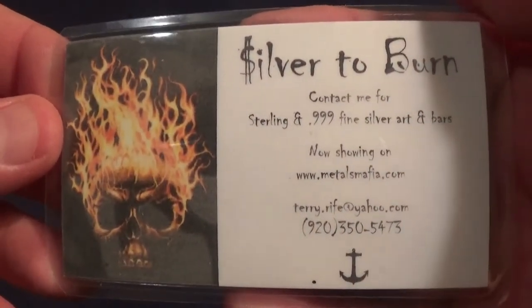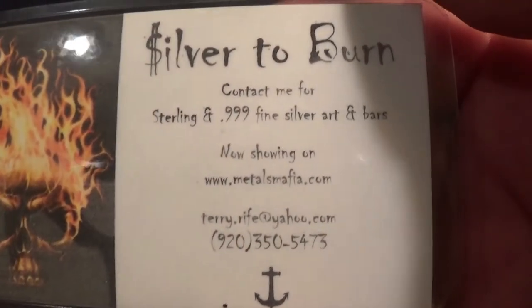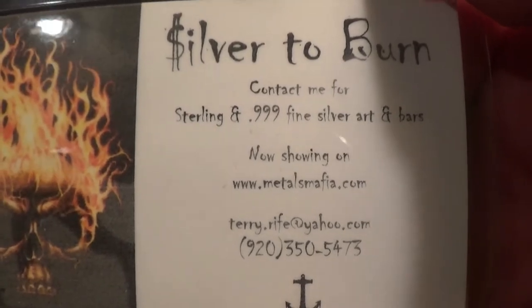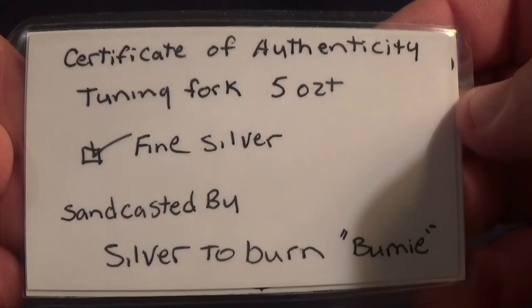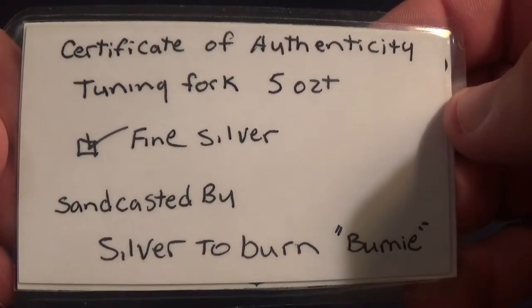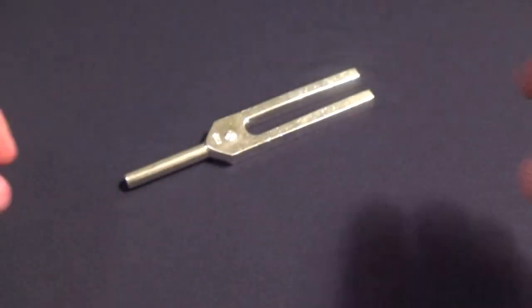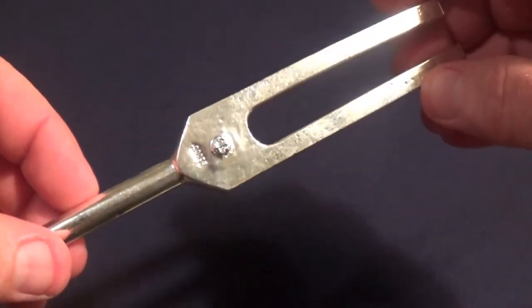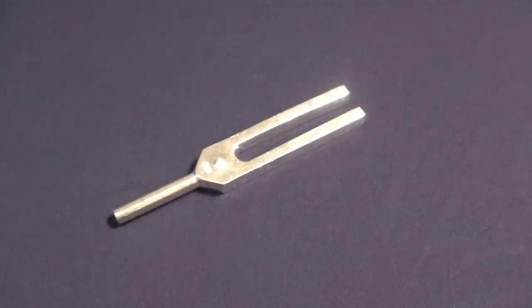Here is the COA - the Burning Skull, Silver to Burn. There's the info if you want an outstanding piece of silver custom made for you. And then of course on the back, COA: the tuning fork, five troy ounces of fine silver sand casted by Silver to Burn Bernie. Hot dog, as Bernie says.